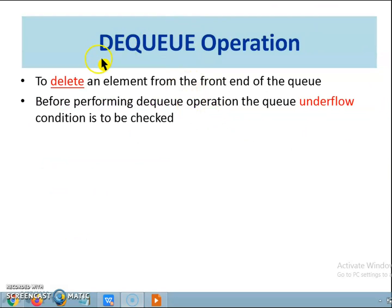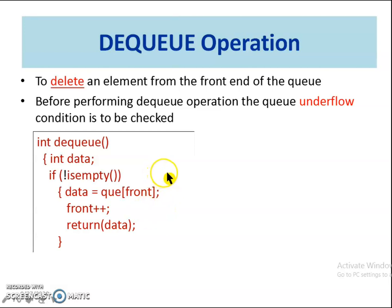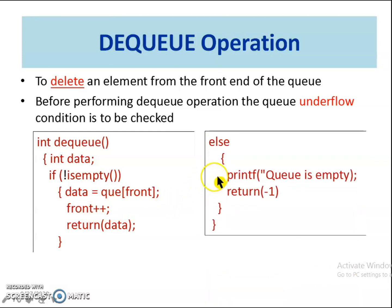Next, let us see the dequeue operation. The dequeue function is used to delete an element from the front end of the queue. The dequeue function invokes the isEmpty function to check whether the queue is empty, because deletion cannot be performed if the queue is empty. Recall the FIFO property: the first inserted element is the first one to be removed. Hence, retrieve and return the element from the front end of the queue, then increment the front index by 1. If the queue is empty, the message queue empty is printed and the value minus 1 is returned.